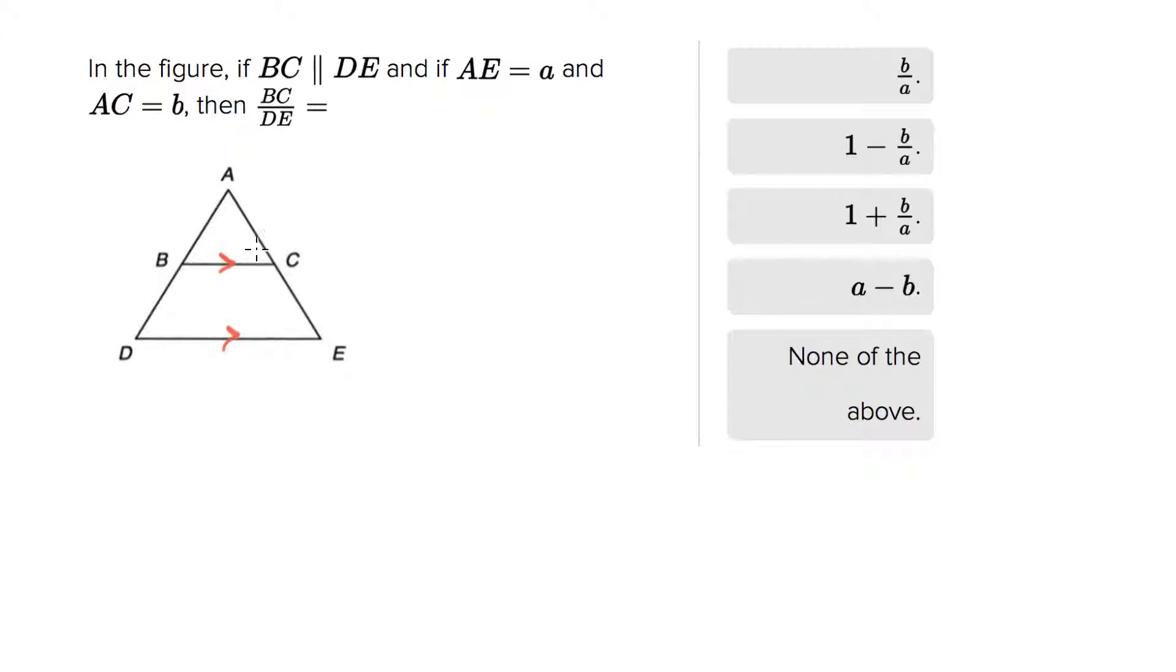As soon as you know that, you know that the angles, for example C and E, have the same measure because that's a rule where you have two parallel lines cut by a transversal.